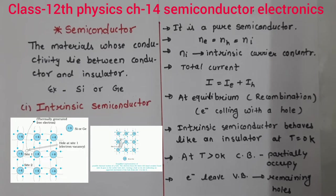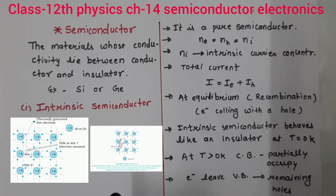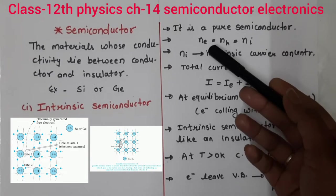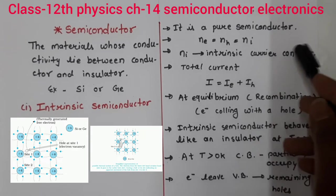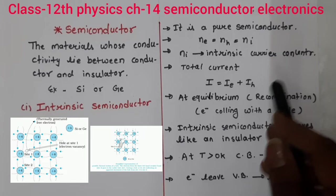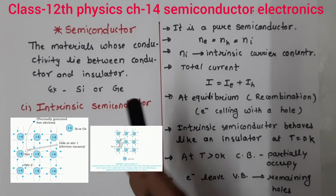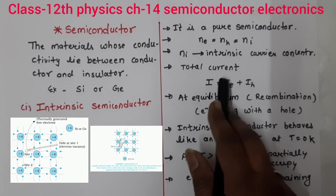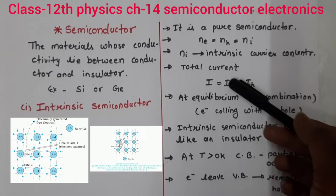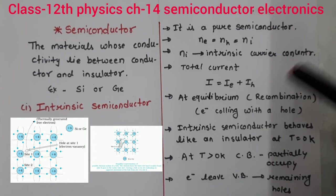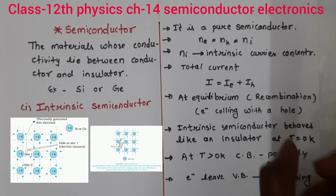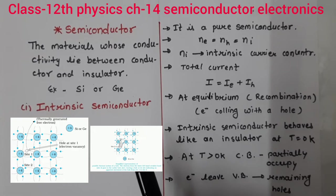Intrinsic semiconductor mein yeh hota hai ki yeh pure semiconductor hota hai — isme koi bhi impurity add nahi kar rahe hain. Pure semiconductor is called intrinsic semiconductor. In intrinsic semiconductor, number of electrons and number of holes dono equal hote hain: NE is equal to NH, means number of electrons is equal to number of holes. Ise common mein intrinsic carrier concentration kehte hain, NI. Current jo produce hogi, woh electrons as well as holes dono ke karan hogi. Total current I is equal to IE plus IH — current of electrons and current of holes dono ka sum is equal to the total current.